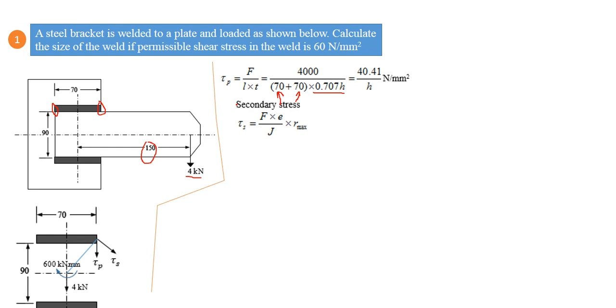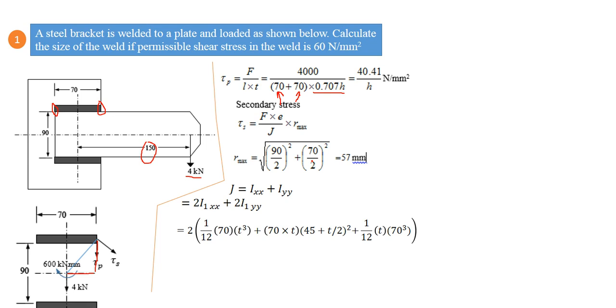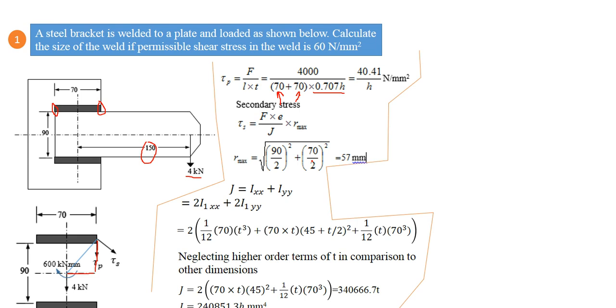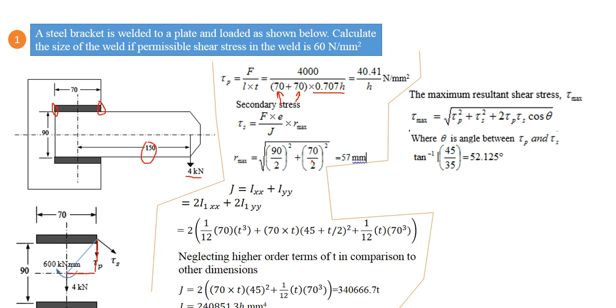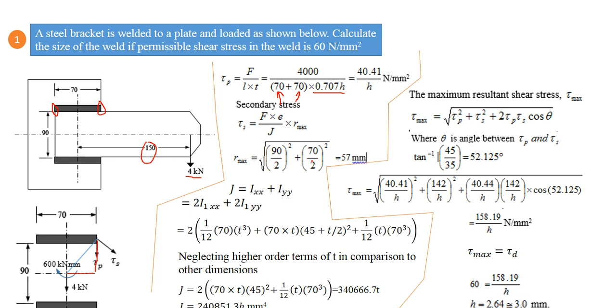So secondary stress is this. We can find out R maximum using simple geometry—this value is 45, 90 by 2; this value is 70 by 2, so we can find out the R maximum. J we can calculate as we have explained in our last video, so I am not repeating the complete method. This is how J is obtained. We can find out tau maximum, theta we can calculate like this. Tau maximum, substitute values, we get this value. Apply design equation, we get arch is equal to 3 mm as our answer.